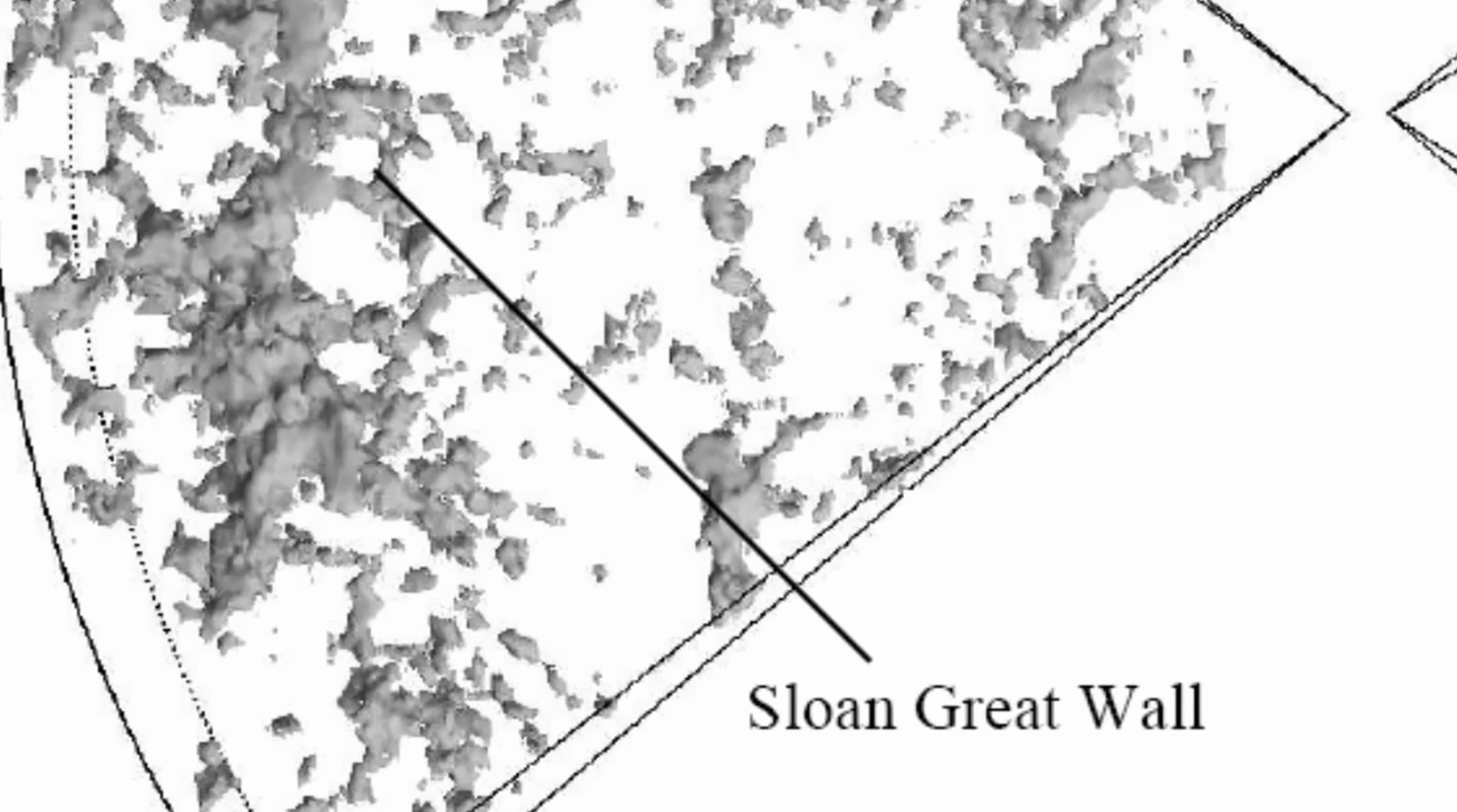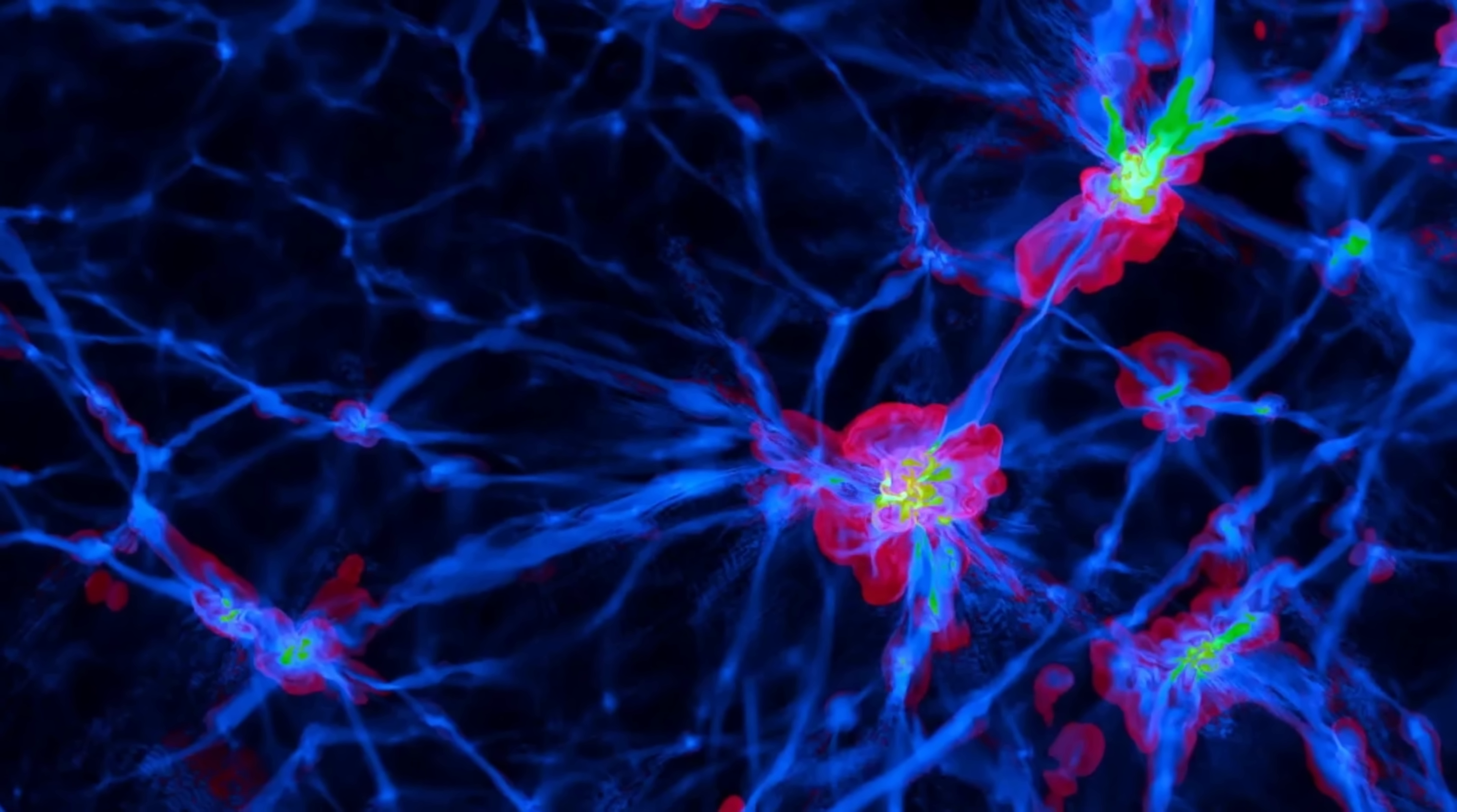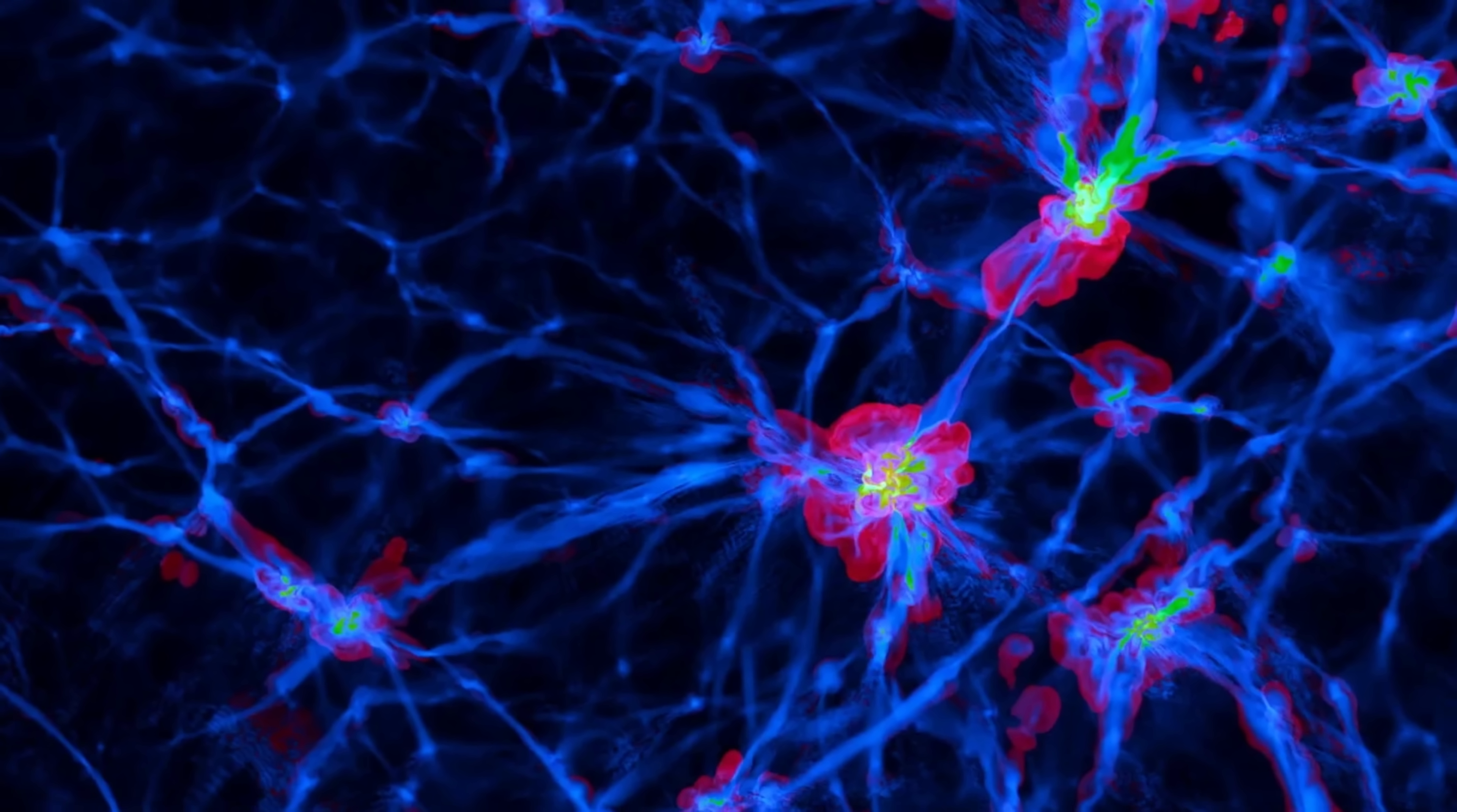The next large discovery was the Sloan Great Wall, found in 2003, which was even larger and more massive. And pretty much every year after that, there were new discoveries of additional filaments or additional walls, as they're also known, which essentially represented these huge conglomerates of many different galaxies and gas together, often stretching for millions of light-years, or in some cases even billions of light-years.